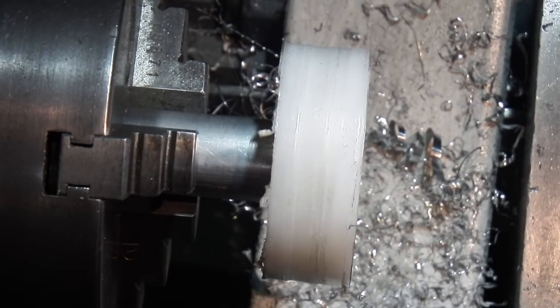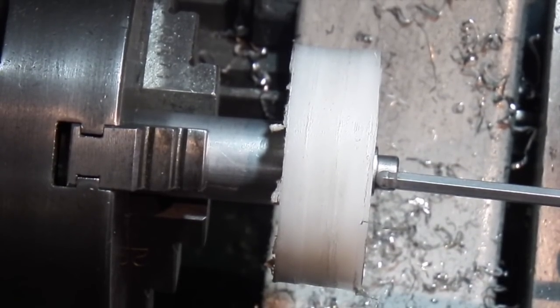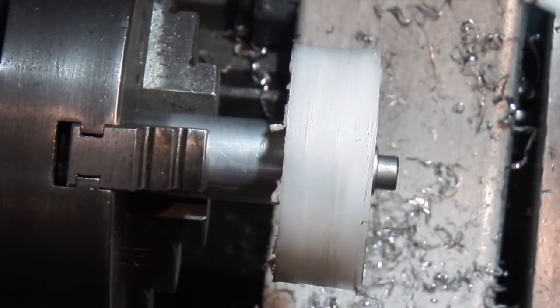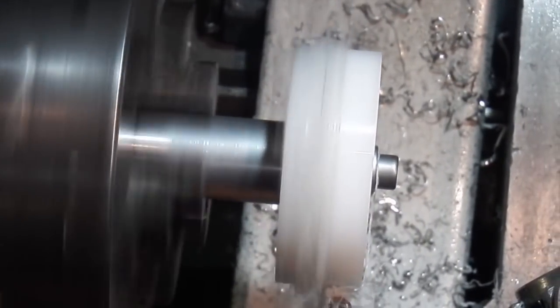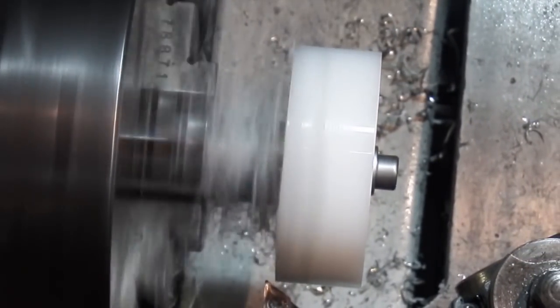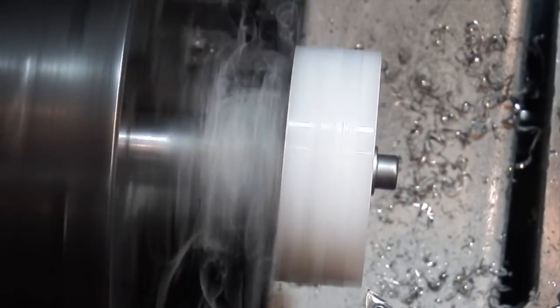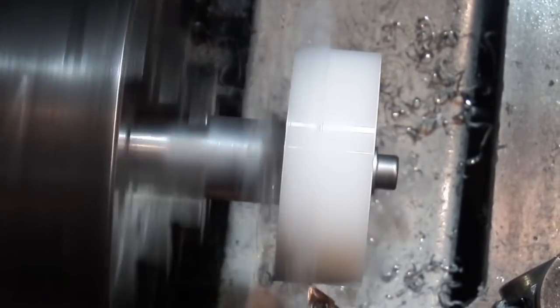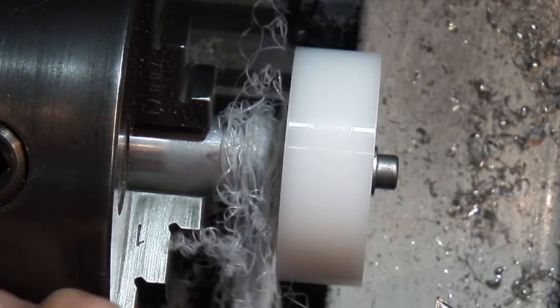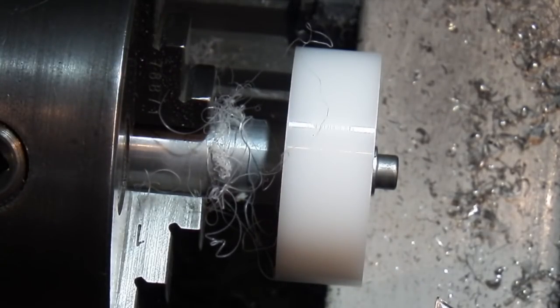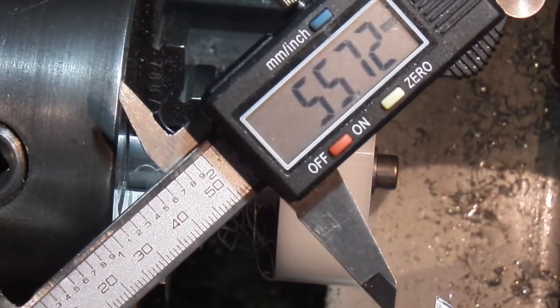Now I'll find a cap head and washer to hold that. I've just tightened the cap head up with a little washer in front, so that'll stop it spinning. Now I can true the outside up. This diameter is 55.7.